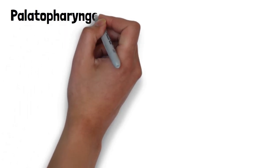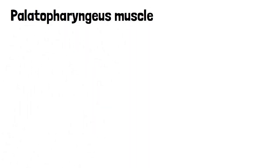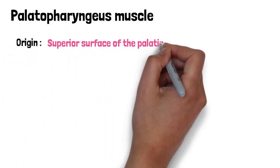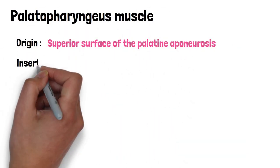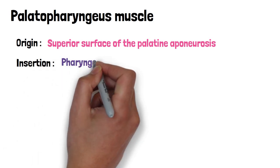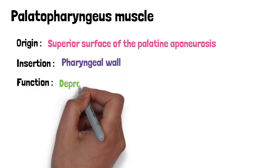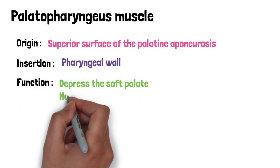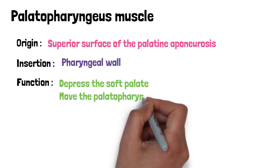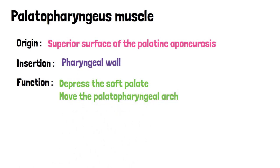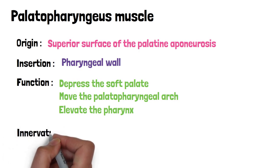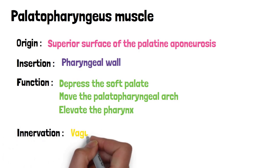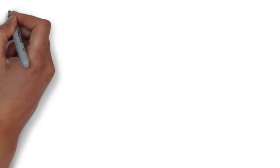The palatopharyngeus muscle originates from the superior surface of the palatine aponeurosis and inserts into the pharyngeal wall. Its function is to depress the soft palate, move the palatopharyngeal arch towards the midline like curtains, and also to elevate the pharynx. The palatopharyngeus muscle is also innervated by the vagus nerve.